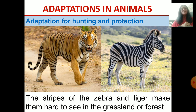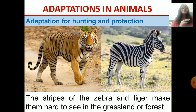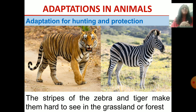Another example is the stripes of zebra and tiger. The tiger has got stripes on its body, and zebras have black and white stripes. Because of these stripes they become invisible — they become difficult to spot. The color of their skin camouflages with the surrounding grassland or forest, and it becomes difficult to spot them.